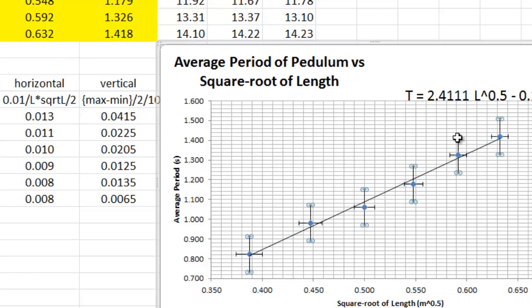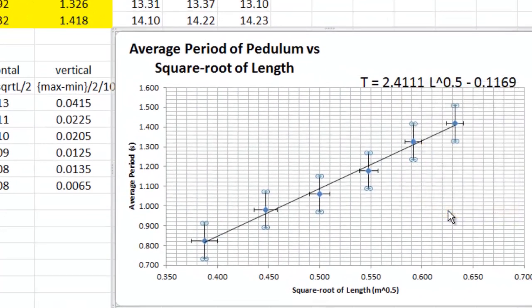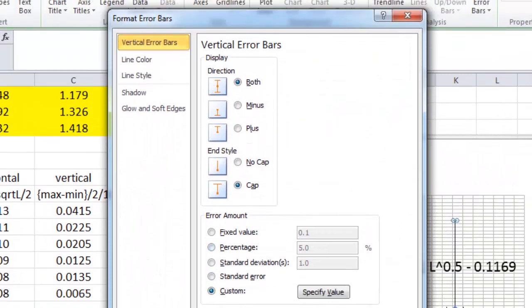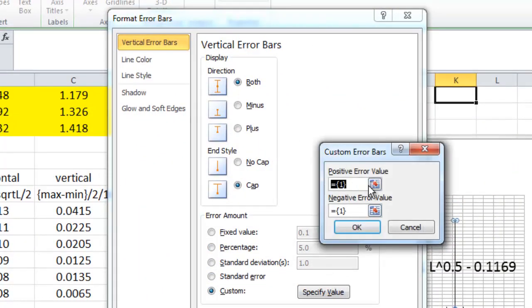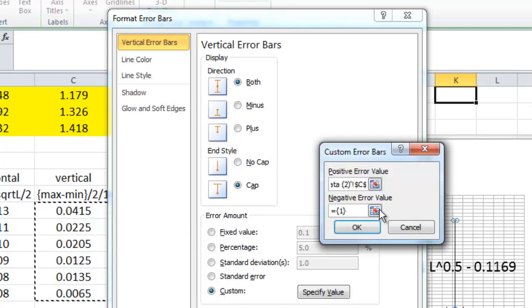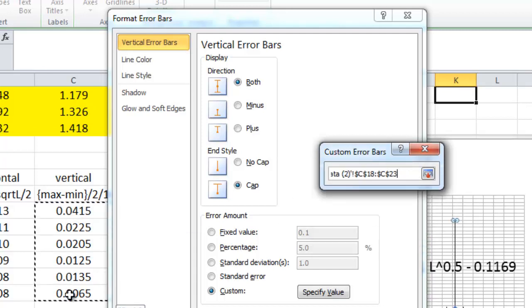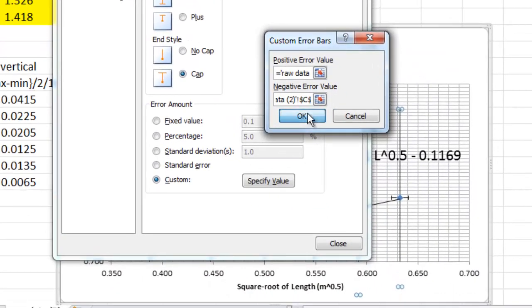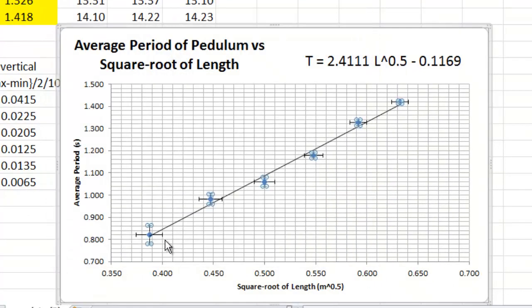Vertical error bars. Select those. Format. This pops up. You want to customize. Specify that value. You want to click on that top little box and select the vertical ones we calculated. Do it twice. Once for up, once for down. You hit OK. You hit close. And finally we're done. Now we have these little tiny tiny vertical error bars.